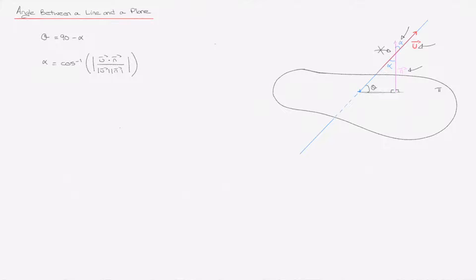What we've found so far is a formula to find the angle alpha between the vectors u and n. And using the fact that theta equals 90 minus alpha, we're done — we have a formula for theta. We can write theta equals 90 minus arccos, or inverse cos, of the absolute value of u dot n over the product of their respective magnitudes.